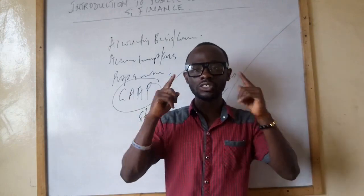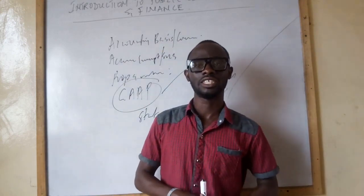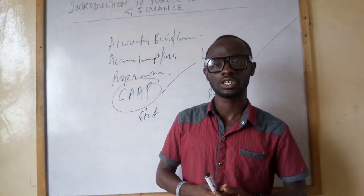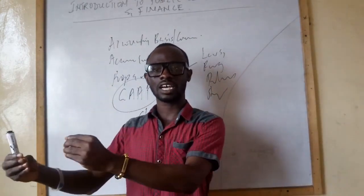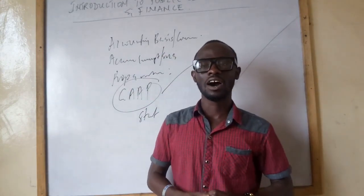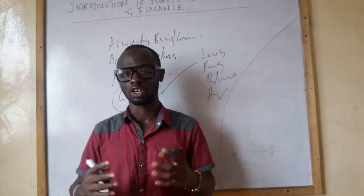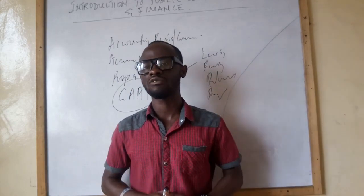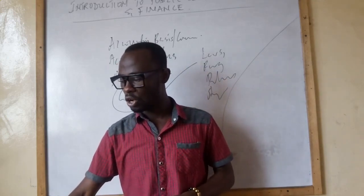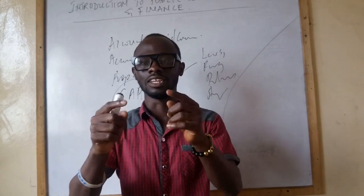In summary, in module one we covered: what public sector accounting is; the definition of government; what government accounting is; the types of public sector organizations; information produced by public sector organizations; how government controls public sector organizations; why government establishes them; the users of public sector information; and the concept of privatization. That concludes module one. See you in the next module: Basis of Public Sector Accounting.